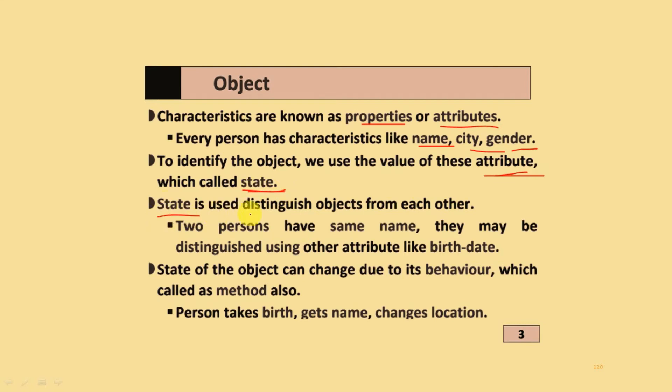State is used to distinguish objects from each other. Two persons have the same name, they may be distinguished using other attributes like birth date. State of the object can change due to its behavior, which is called method.